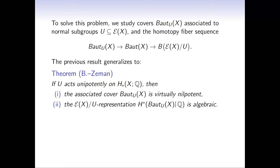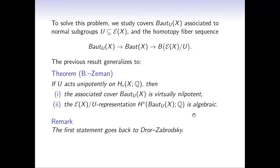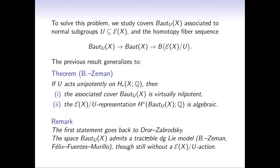The first statement goes back to an old result of Dror and Zabrodsky, who proved nilpotence when you act nilpotently on integral homology. This space also admits a tractable DG Lie model—proved by Félix, Fuentes, and Murillo last year; we also give an independent proof in our paper. I should mention this is joint work with my postdoc at Stockholm University, Tom Zeman. But we still have these DG Lie models without any action of the transformation group, so we have more work to do.